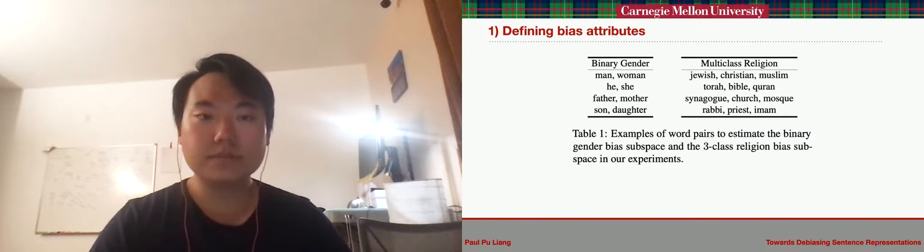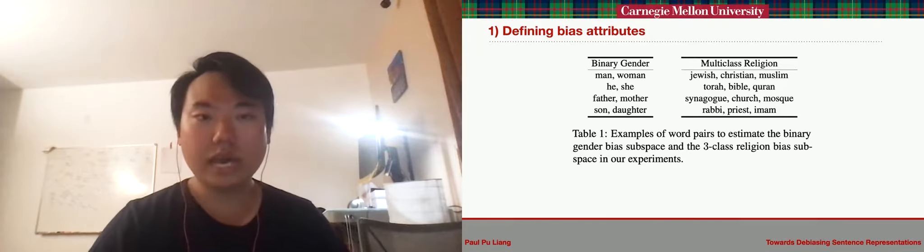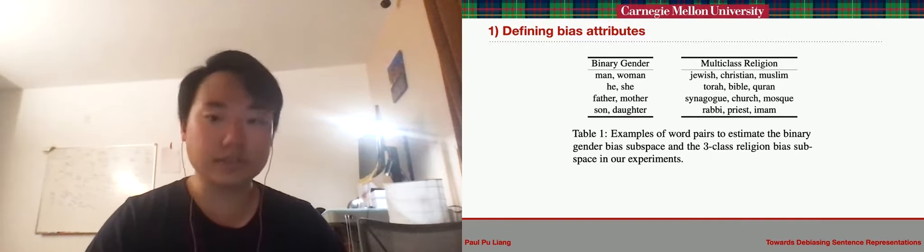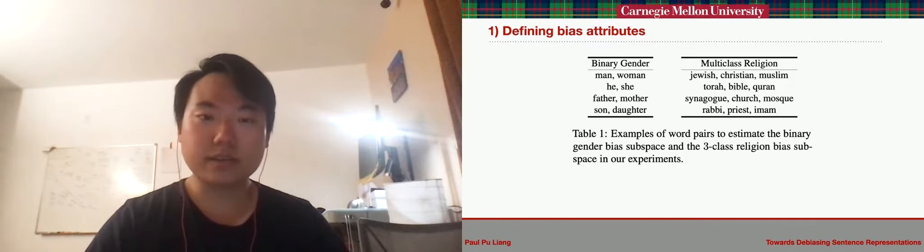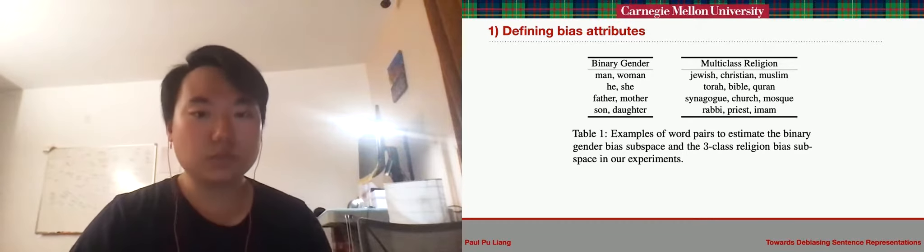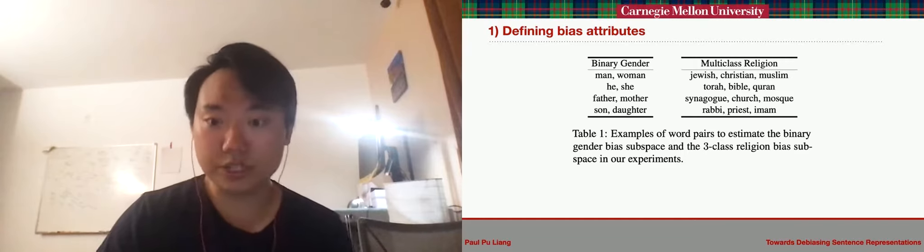In this paper, as a step towards generalizing debiasing methods to sentence representations, we aim to capture the various ways in which biased attribute words can be used in natural sentences. Our approach, like the baselines, starts with a set of biased attribute words that are indicative of biased attributes such as gender or religion.